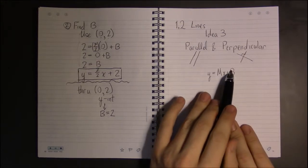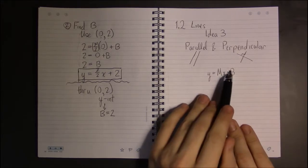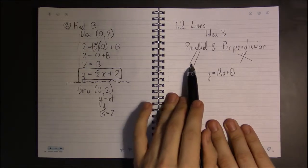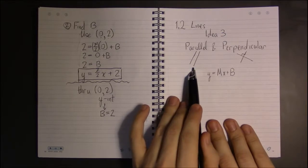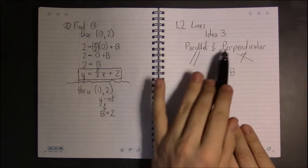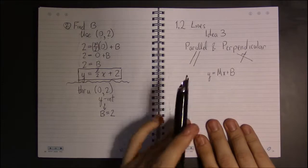Well, it really has nothing to do with the y-intercept. It doesn't have anything to do with b. What determines whether they're parallel or perpendicular has everything to do with their slopes.